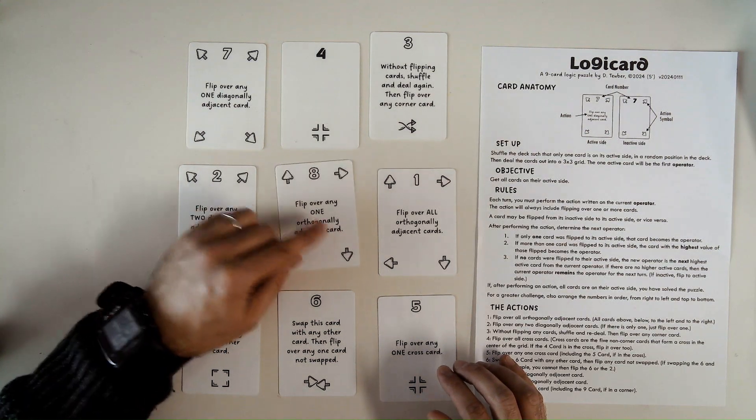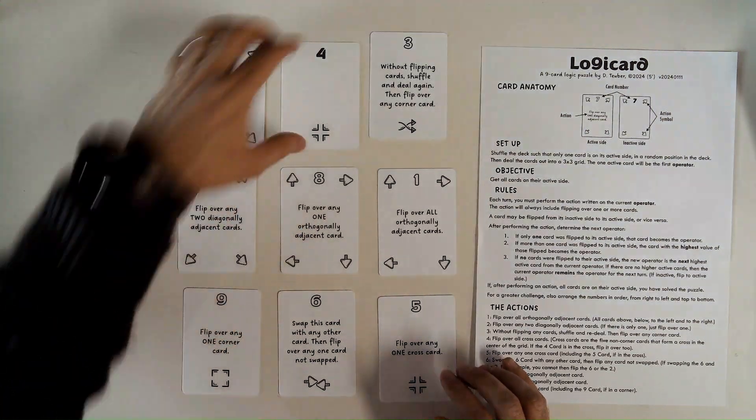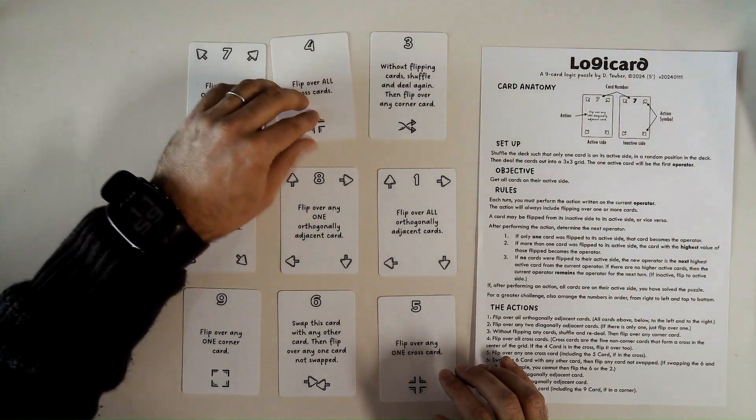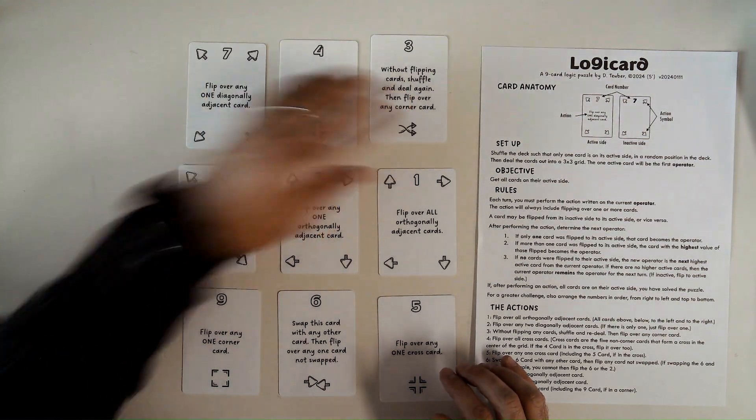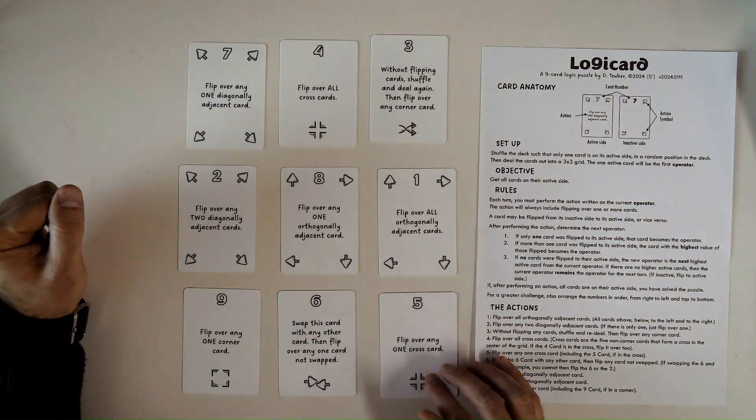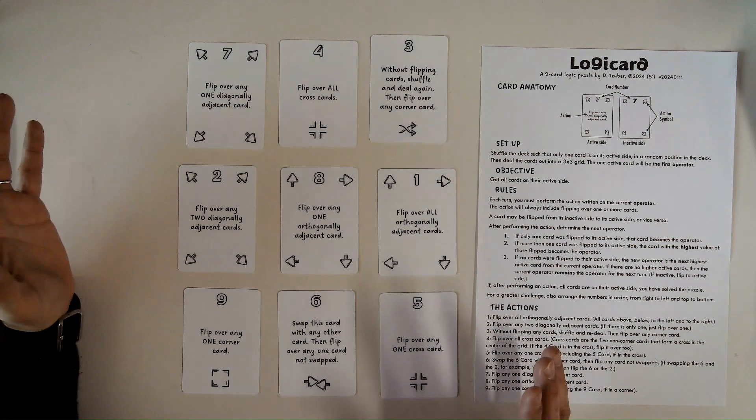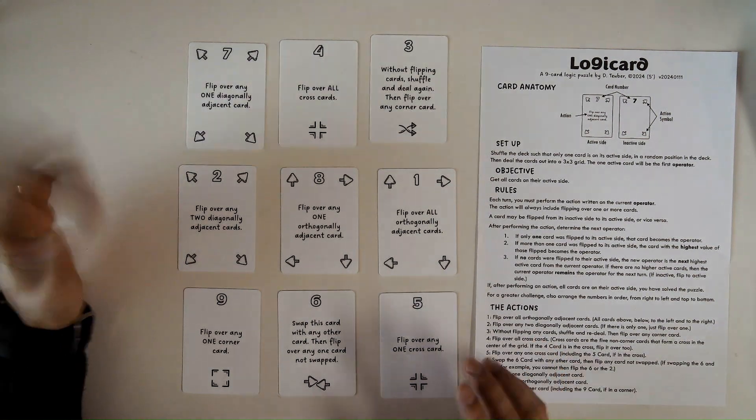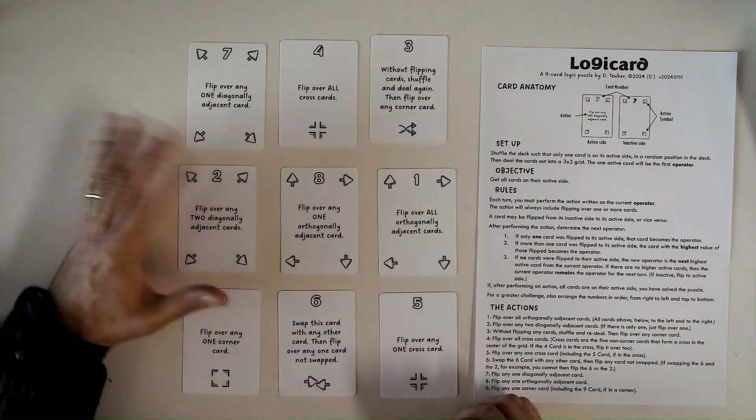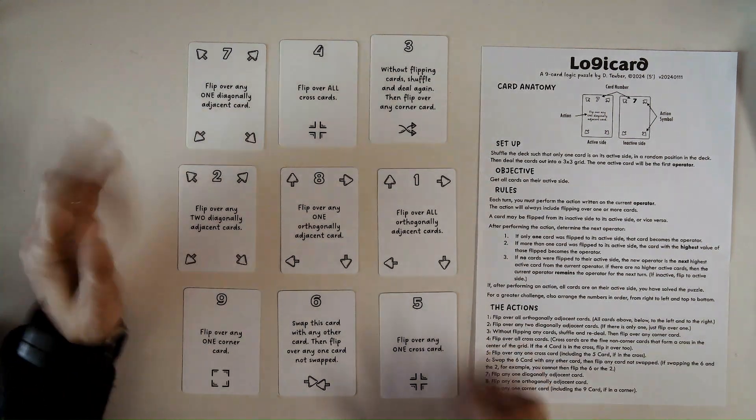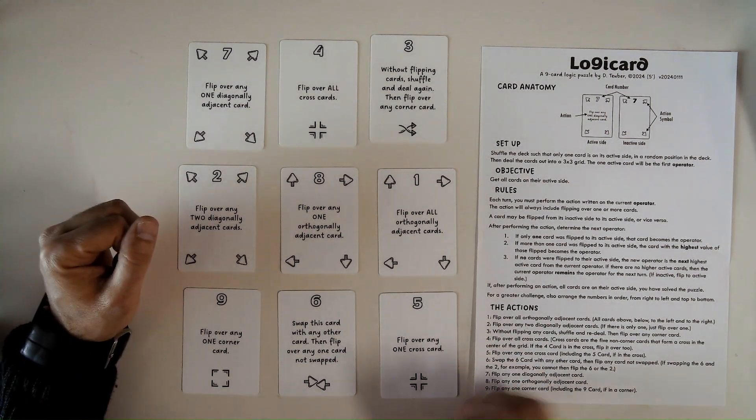8 becomes the operator. I can flip over any one orthogonally adjacent card. I can flip over the 4. And I've solved the puzzle. There are over 3 million different setups for this game. So each game is a little bit different. But they contain the same cards. So you're doing kind of the same kind of actions.